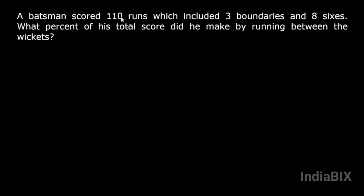A batsman scored 110 runs which included three boundaries and eight sixes. What percent of his total score did he make by running between the wickets? In cricket, runs can be scored in three ways: by hitting sixes, by hitting fours, or by running between the wickets, which means taking singles, doubles, or triples. The batsman here has scored a total of 110 runs.